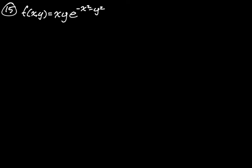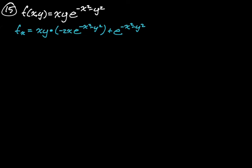First, we need to find partial_x. We're going to treat it as a product where the first thing is xy and the second is e^(−x²−y²). So we get: first times derivative of the second with respect to x, which is −2x·e^(−x²−y²), plus the second times derivative of the first with respect to x, which is just y. We can factor out y·e^(−x²−y²) to get y·e^(−x²−y²)·(−2x²+1).